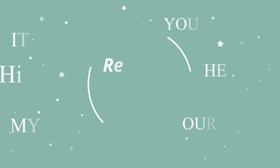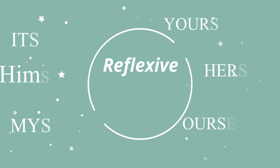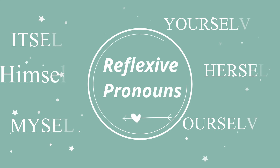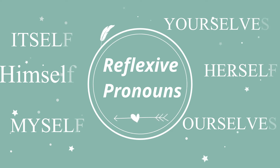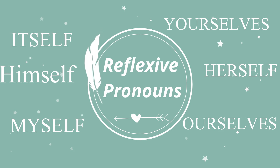Next on the list is the reflexive pronoun. Reflexive pronouns are words ending in -self or -selves that are used when the subject and the object of a sentence are the same. For example: She believes in herself. They can act as either objects or indirect objects. The nine English reflexive pronouns are yourself, myself, himself, herself, oneself, itself, ourselves, yourselves, and themselves.